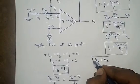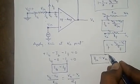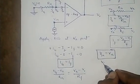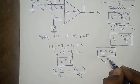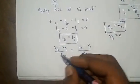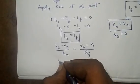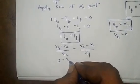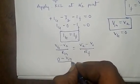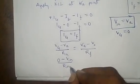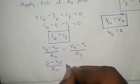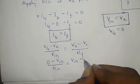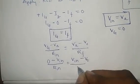Since VZ is equal to 0, we substitute: (0 − VIN) / Rn = (VIN − V0) / RF, which gives −VIN / Rn = (VIN − V0) / RF.